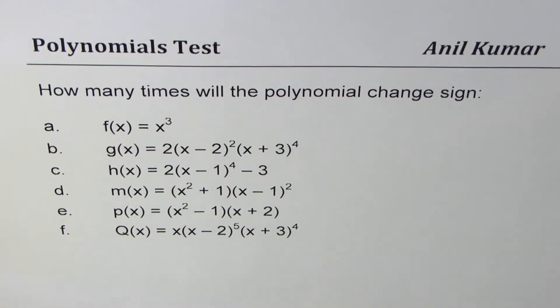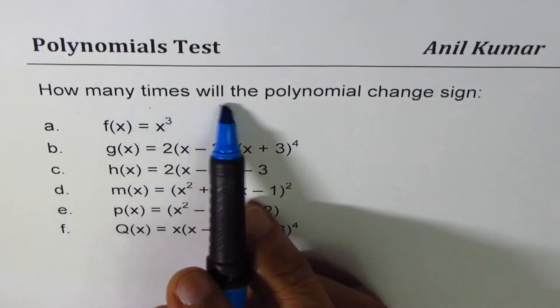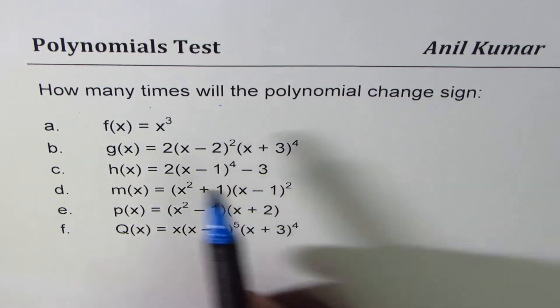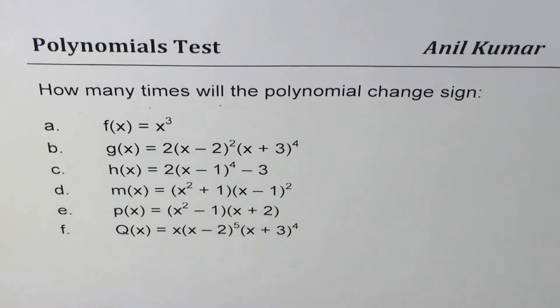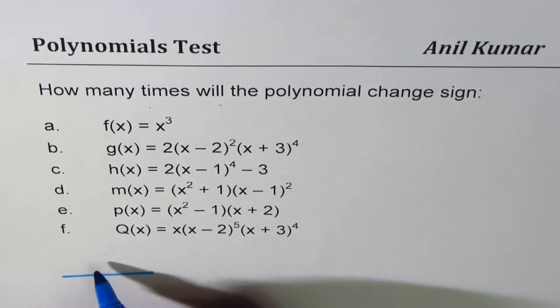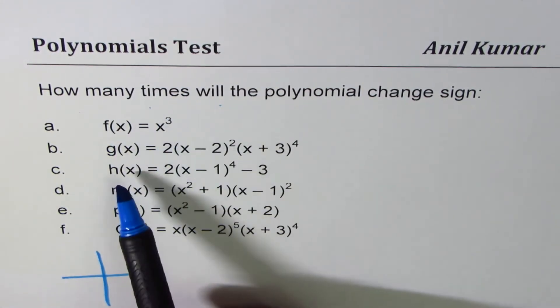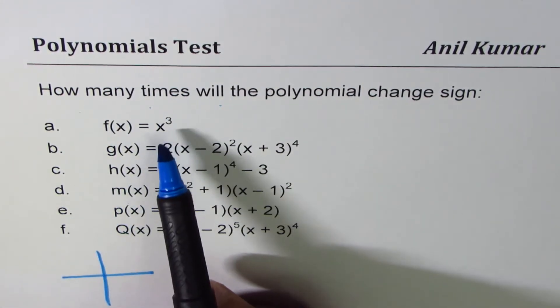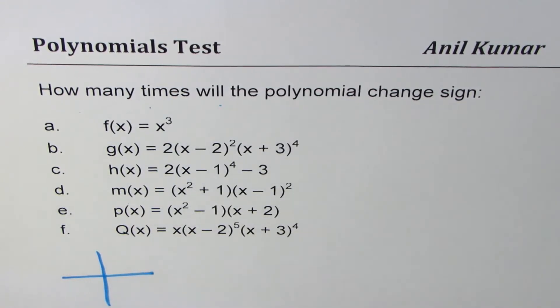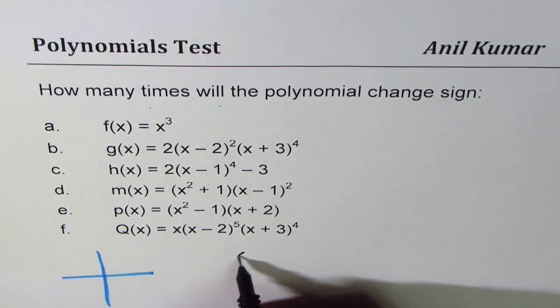I'm Anil Kumar and in this video we'll try to understand how many times will the polynomial change sign. We have six functions here. A polynomial can only change sign at its zeros. If the zero is odd then it changes sign, and if the zero is even it does not change sign.